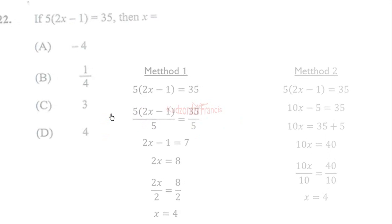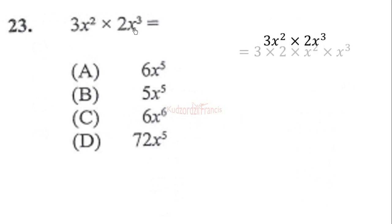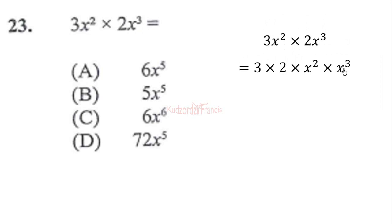Question 23: simplify 3x squared times 2x cubed. We multiply the real numbers together and also multiply the variables. This gives 6x to the exponent 2 plus 3, because from the law of indices when the bases are the same you add the exponents, giving 6x to the exponent 5. The correct choice is option A.